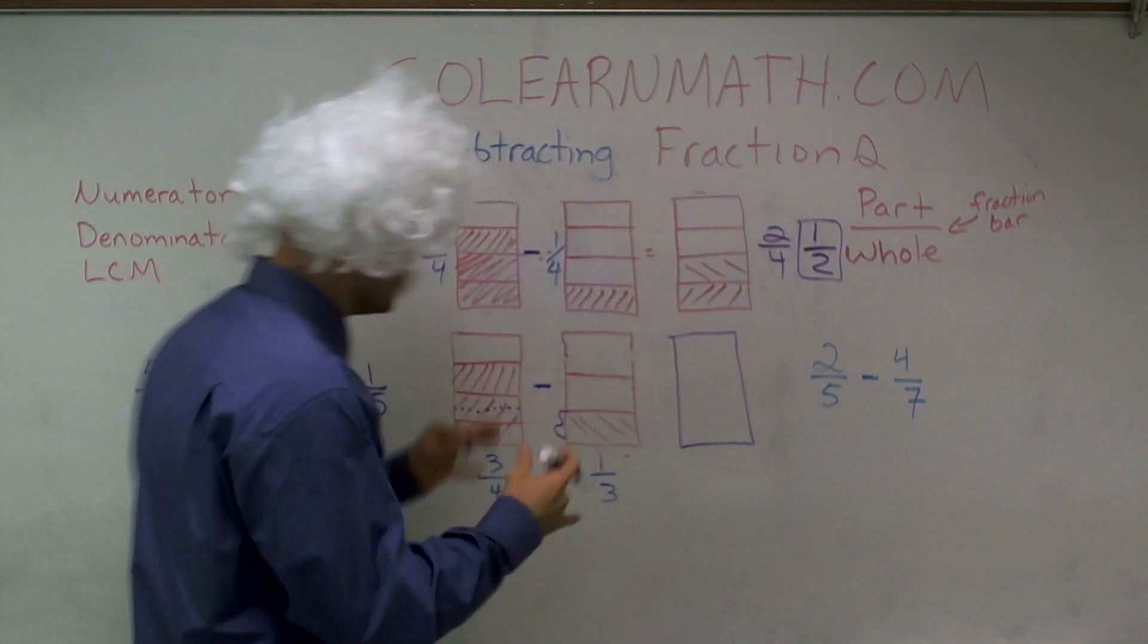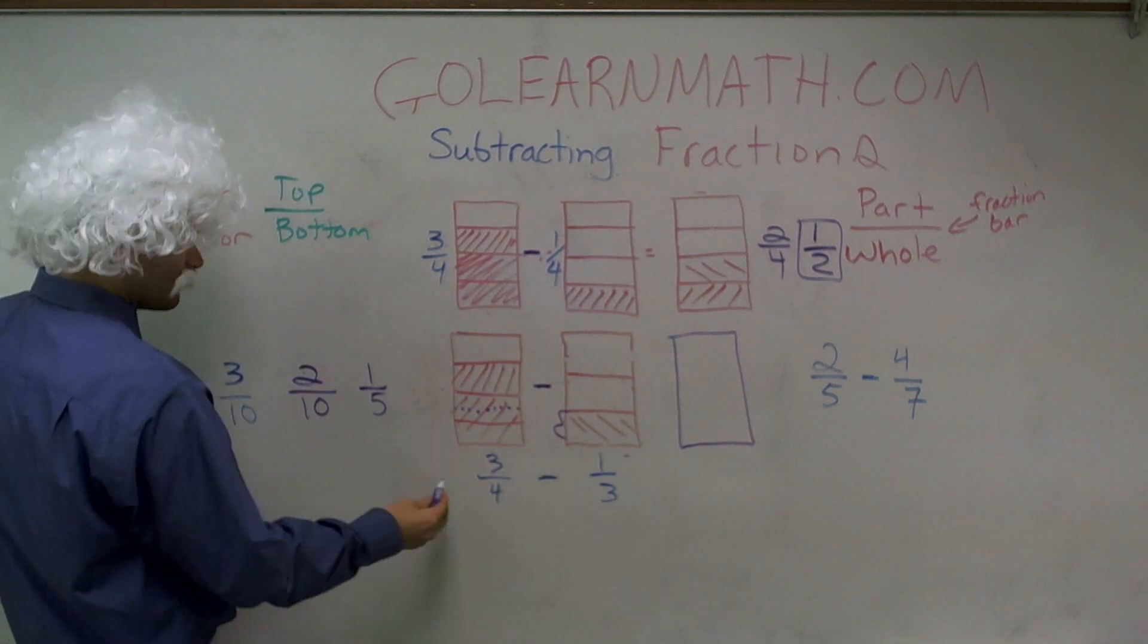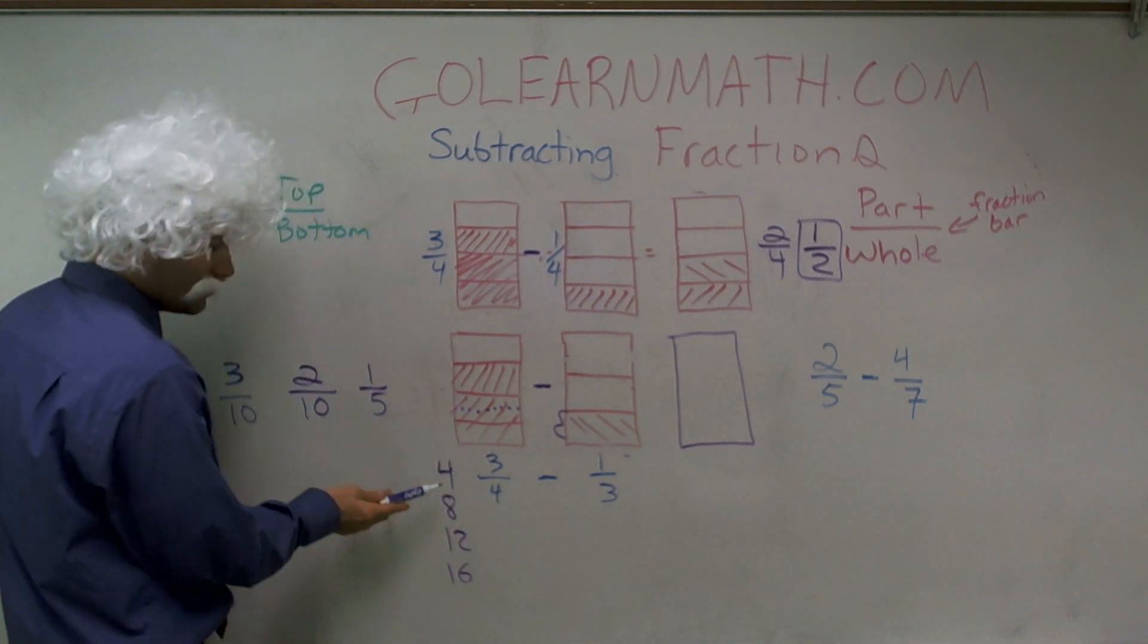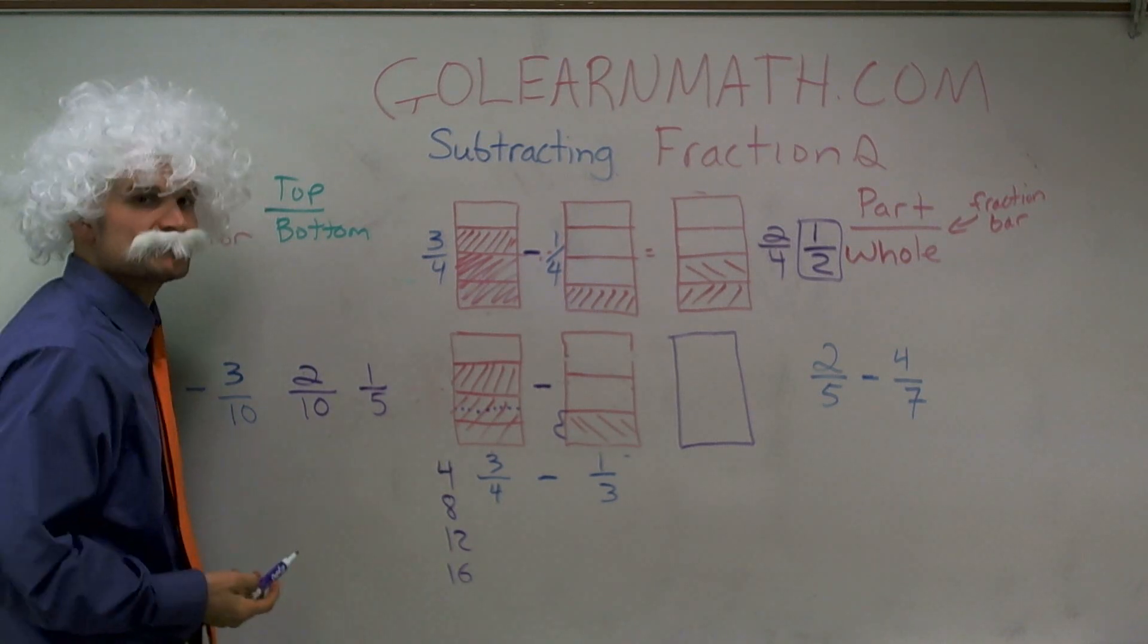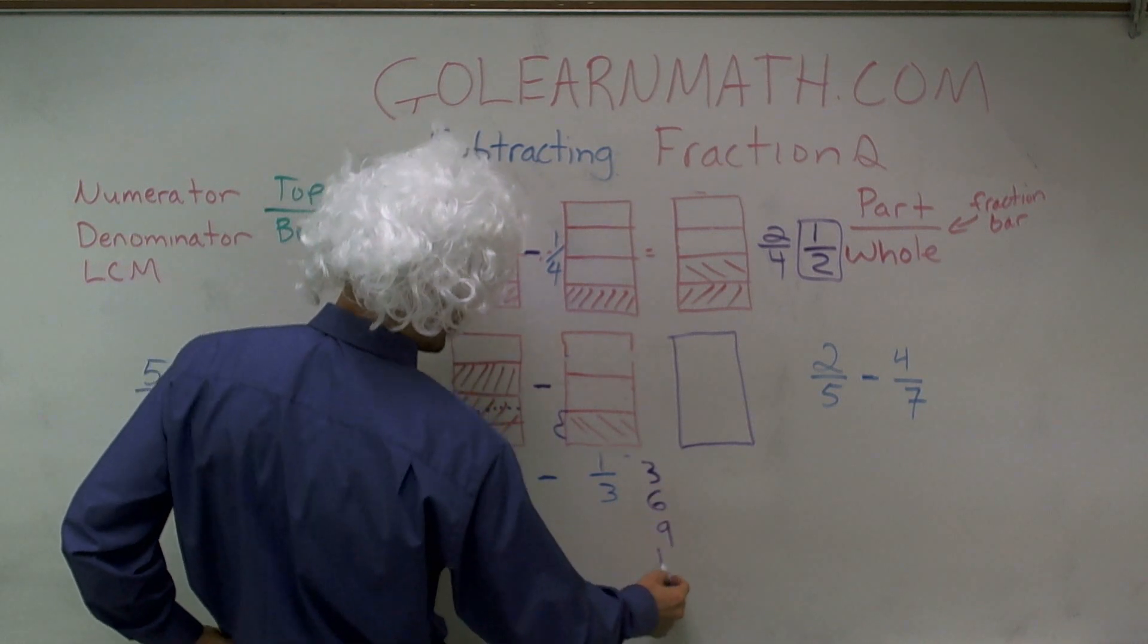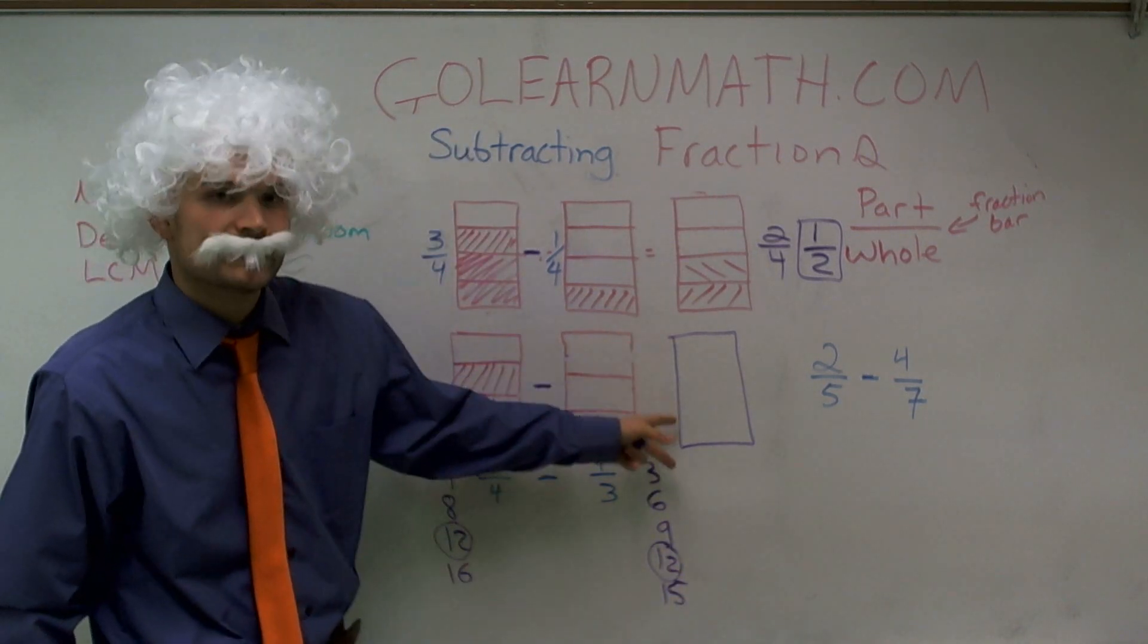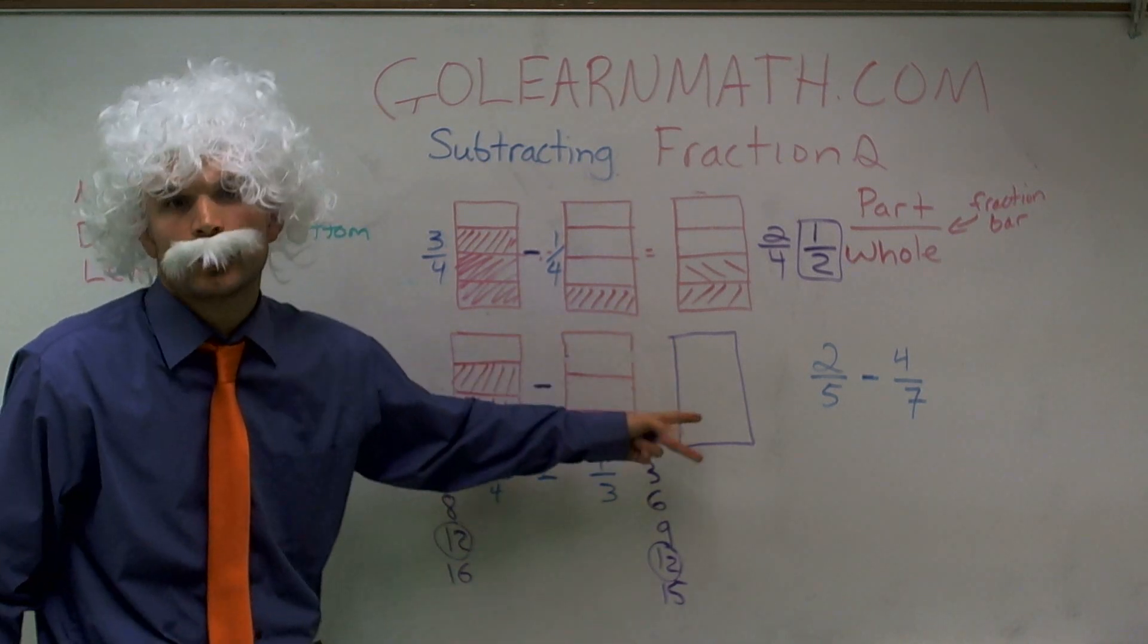So I need to find the least common multiple for my two fractions. So I look at 3 and 4, and I say, alright, what multiples do these two numbers share? Well, 4 times 1 is 4, 4 times 2 is 8, 4 times 3 is 12, 4 times 4 is 16. For the threes, I have 3, 6, 9, 12, and 15. And what you notice is the smallest number that they share is 12. So what I can do is I can now break up my new fraction, my result, into 12ths.